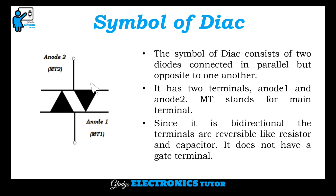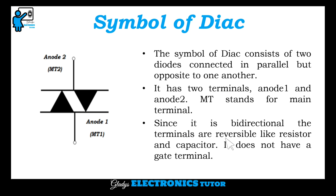This is the symbol of DIARC. The symbol consists of two diodes connected in parallel but opposite to one another. It has two terminals: anode 1 and anode 2. MT stands for main terminal. Since it is bi-directional, the terminals are reversible like a resistor and capacitor. It does not have a gate terminal.